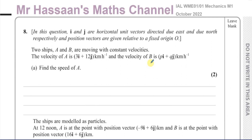This question is all about vectors. In this question, i and j are horizontal unit vectors directed due east and due north. So i is east and j is north, and position vectors are given relative to the fixed origin O. Whenever they say the position vector of something, they mean from O to that point.